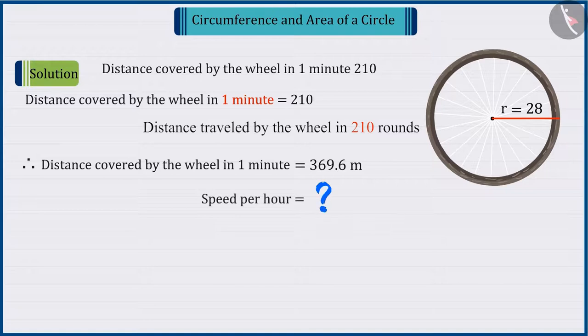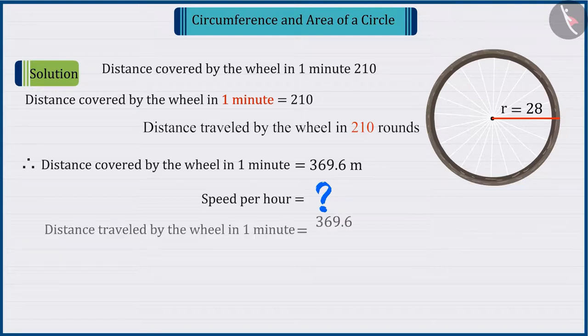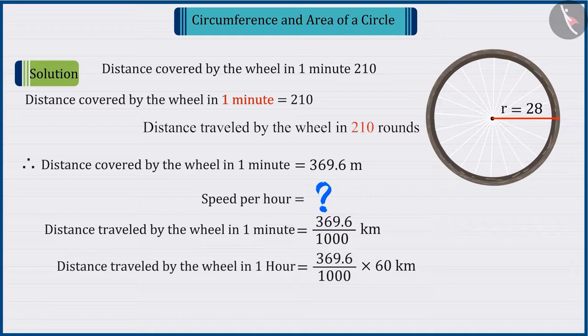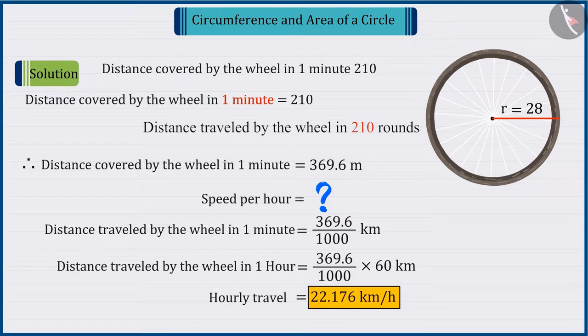Now, can you find the speed per hour of Raj? Absolutely correct! To find the speed in km per hour, we multiply by 60. On solving this, we get 22.176 km per hour.